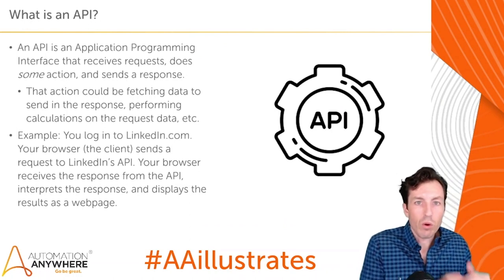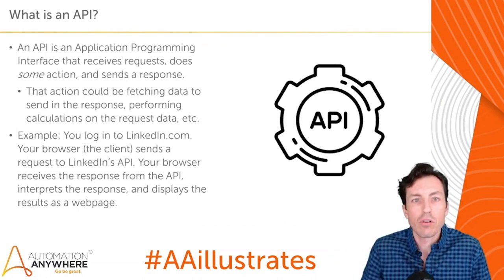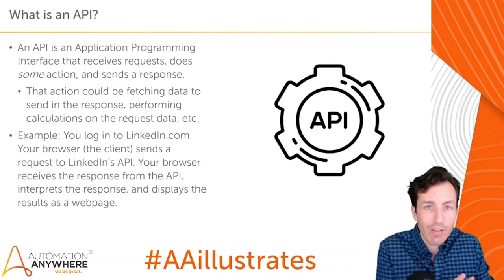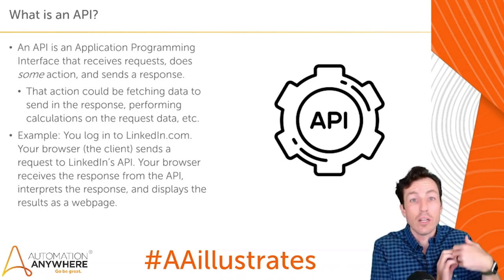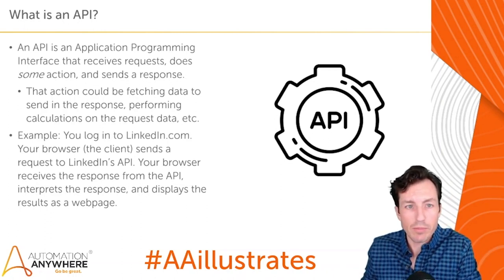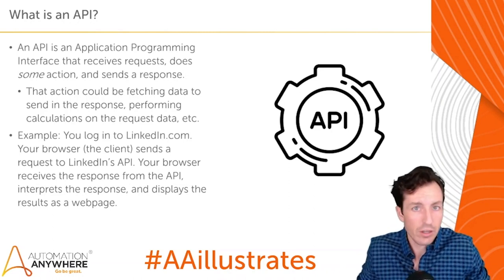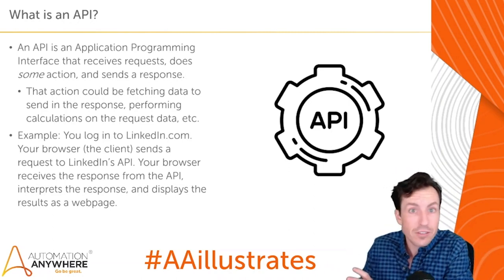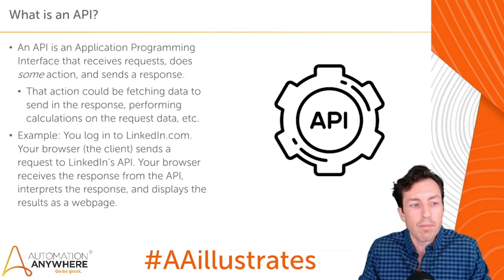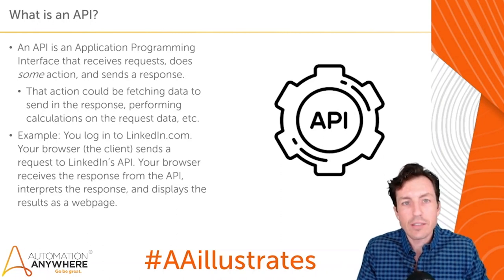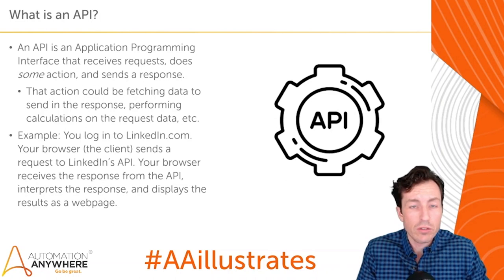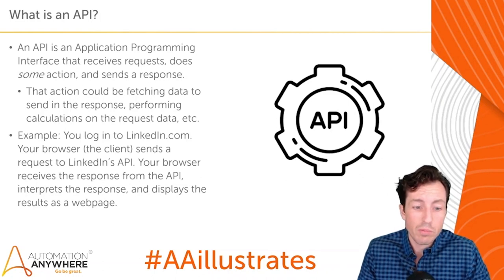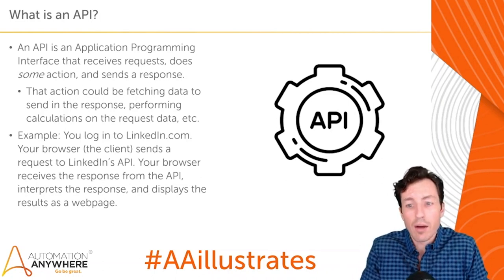Taking a step back — what is an API in general? An API is an Application Programming Interface that receives requests, does some kind of action — whether that's validating data or responding — and sends that response back. That action could be fetching data, doing a database lookup, or doing some manipulation. You might pass in a bunch of text and it passes back an analysis of that text. For example, when you log in to LinkedIn.com, your browser sends a request to LinkedIn's API, receives the response, interprets it, and displays the result as a web page.